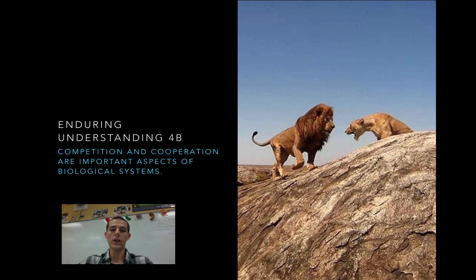For 4B, we're going to look at competition and cooperation, and how those are important aspects of biological systems. At the molecular level, we're going to be looking at the way that molecules cooperate with each other. When we get to organs, we're going to be looking at cooperation between organ systems, so how does the nervous system interact with the respiratory system, etc.